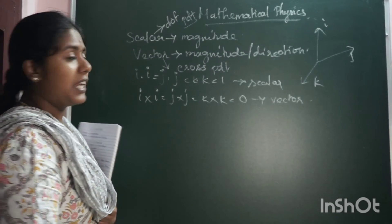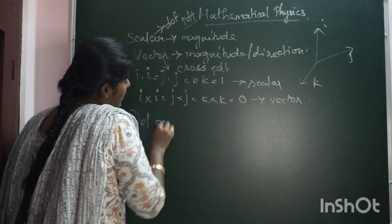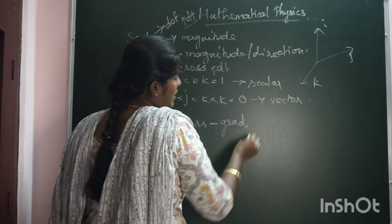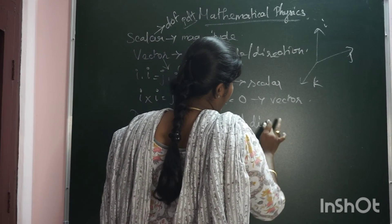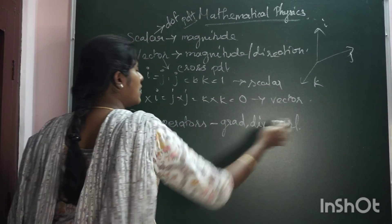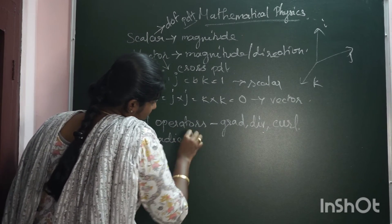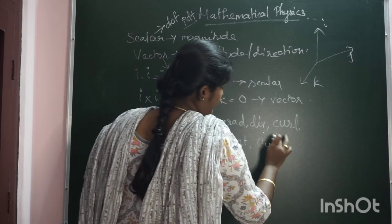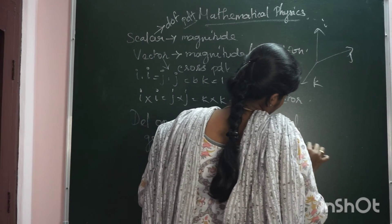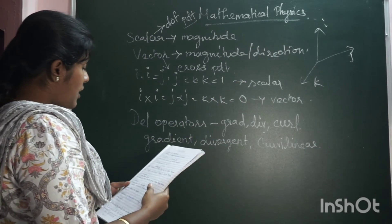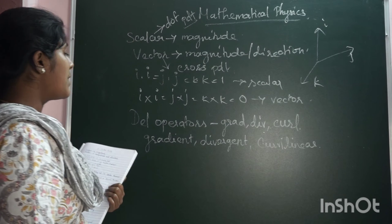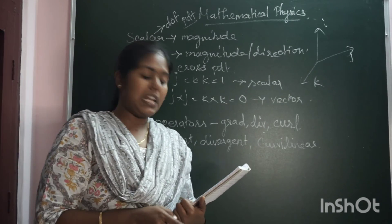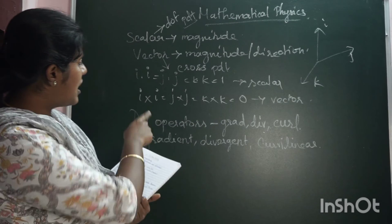What are the three operators of the del? The first one is gradient, next one is divergence, and next one is curl — grad, div, curl. Full forms: gradient, divergence, and curvilinear. This is the del operator. We can use the theorems here — the Stokes theorem and the Gauss theorem. These two theorems are connected to the three operators of the del.